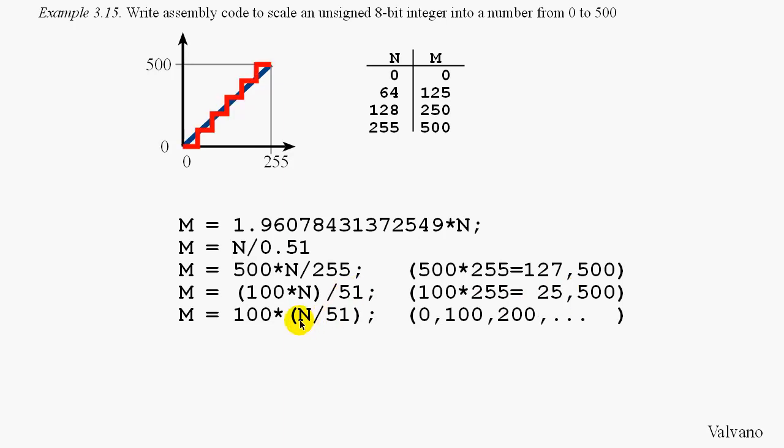However, if I try to solve this overflow problem by dividing first, n divided by 51 will be an integer. And this integer times 100 must be either 0, 100, 200, 300, 400, or 500. And this leads us to an important observation when we multiply and divide in the same expression.